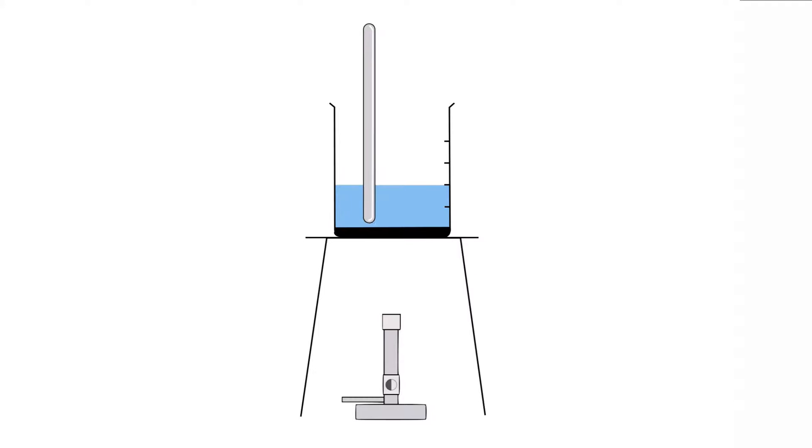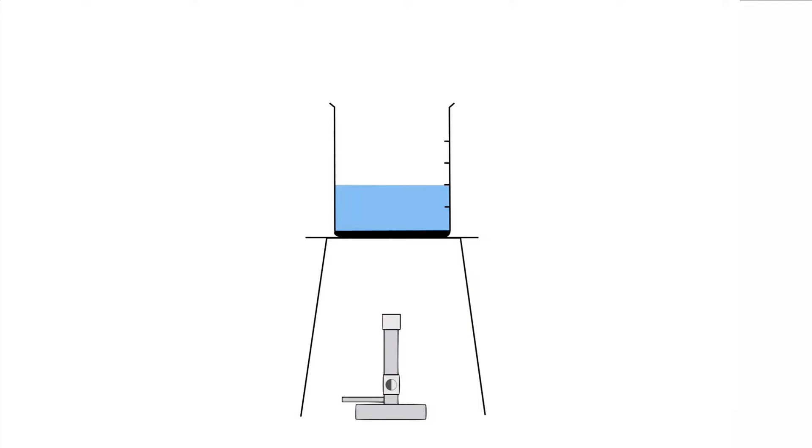If all the copper oxide disappears, that means it has all reacted and we would need to add a little bit more copper oxide because we need to make sure all of the acid has reacted. So we add some more copper oxide, give it another stir. If the reaction has finished, there will be some copper oxide left at the bottom of the container. We add copper oxide in excess so that we know all of the acid has reacted.